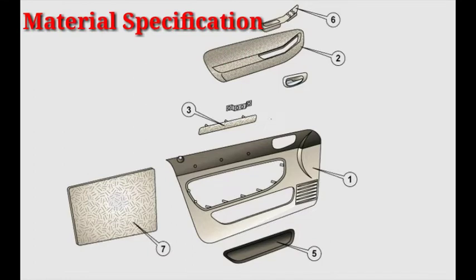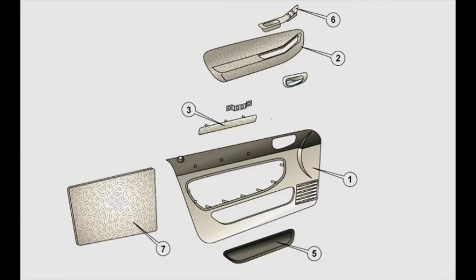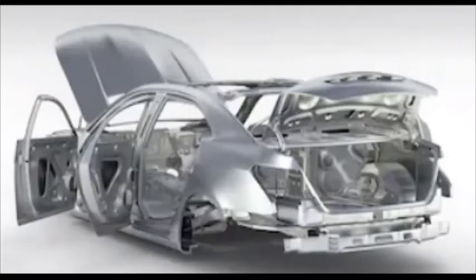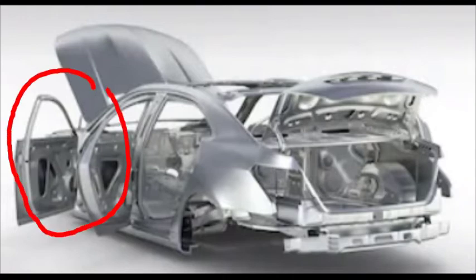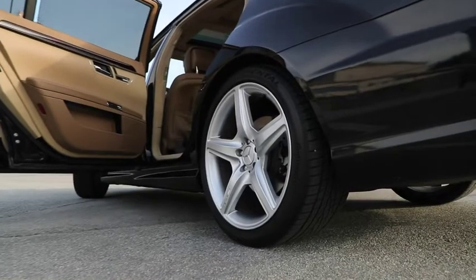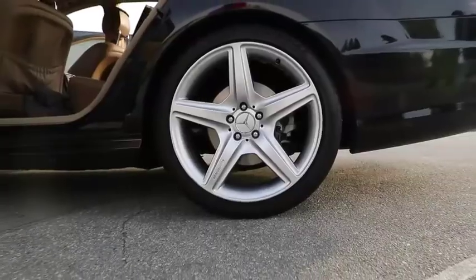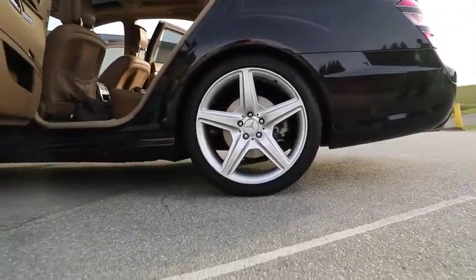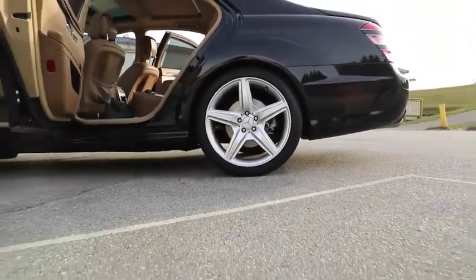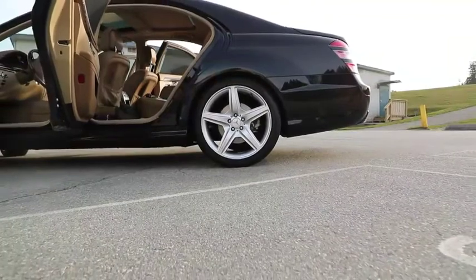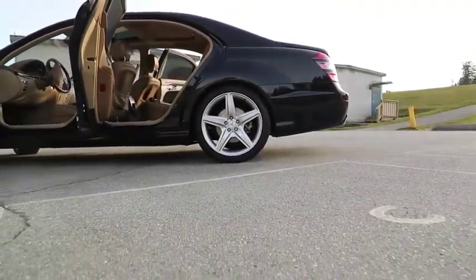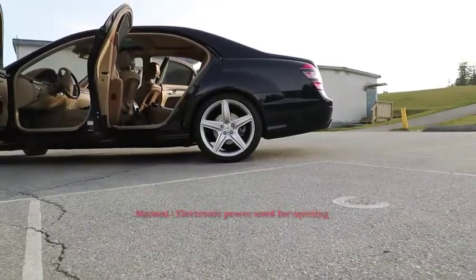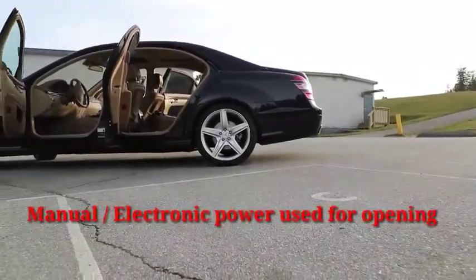Before jumping into door trim design, we should understand some technical aspects. A car door is a type of door made up of sheet metal, typically hinged but sometimes attached by other mechanisms such as tracks or strips, in front of an opening used for entering and exiting a vehicle. A vehicle door can be opened to provide access to the opening or closed to secure it.